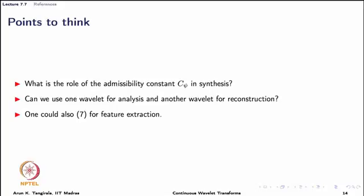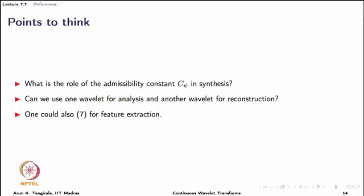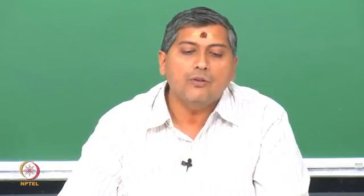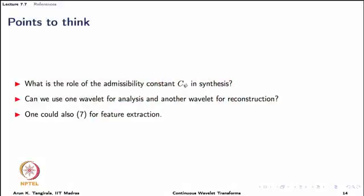This was a question raised in the forum. We will spend a couple of minutes explaining why C_psi appears in the synthesis equation and why the wavelet must be admissible to perfectly recover x(t). A second question is whether we can use one wavelet for analysis and another for synthesis — the answer is yes — and thirdly, we could use the inverse CWT for feature extraction, including oscillatory features.